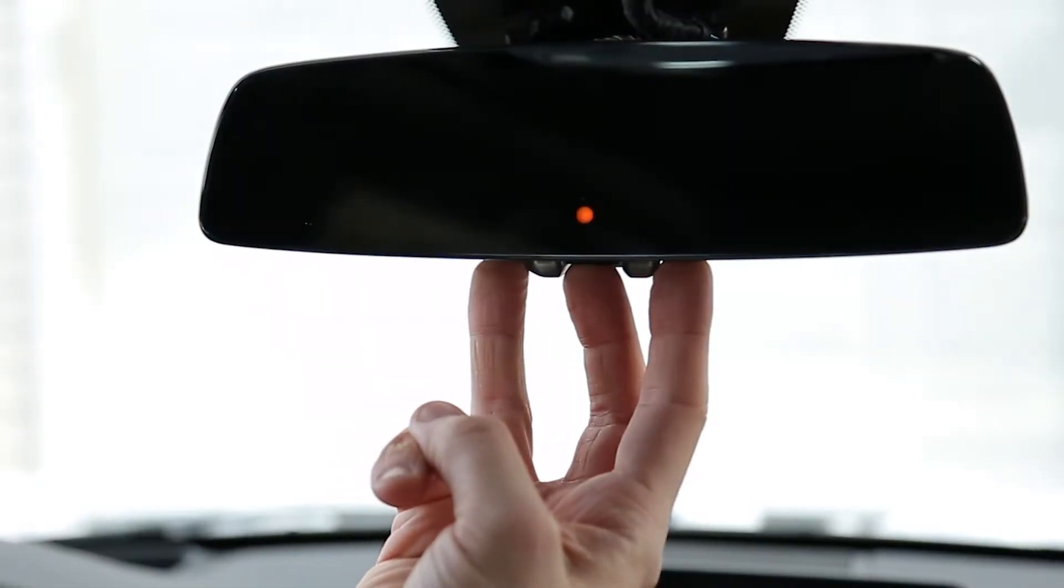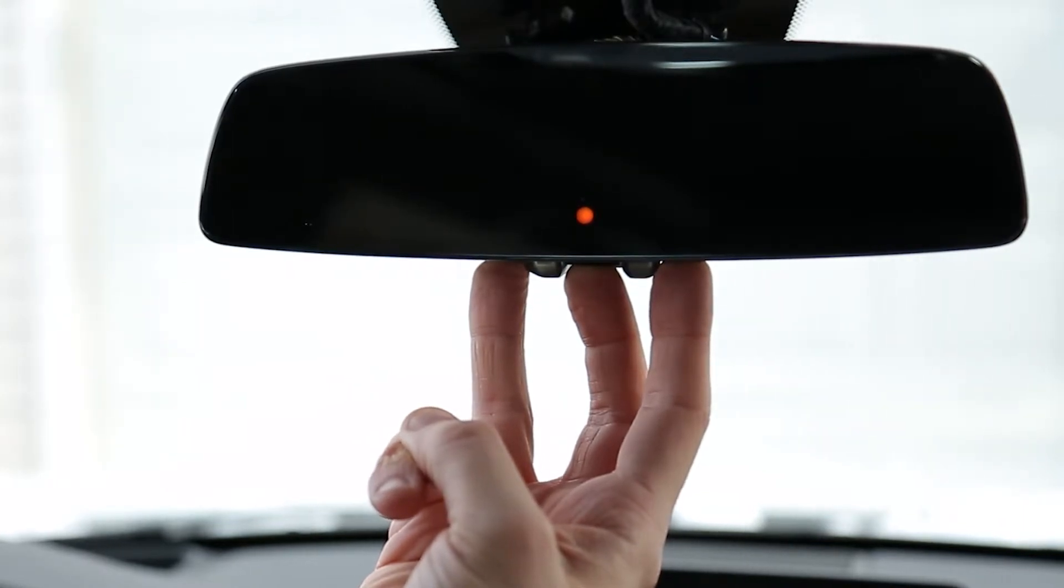Begin by pressing and holding all three HOMELINK buttons for 20 seconds until the indicator light changes from solid to flashing rapidly and then completely turns off.